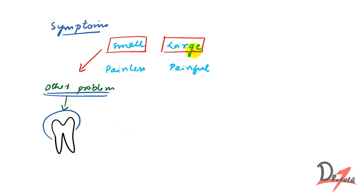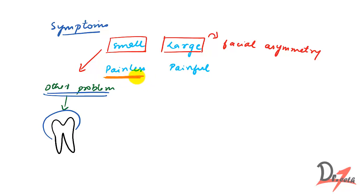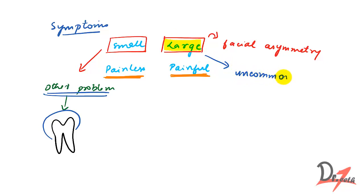If the dentigerous cyst is large, it will expand the bone causing facial asymmetry, but it will still be painless. Painless is the normal characteristic of the dentigerous cyst — it gets painful only when infected. Whether small or large, it will be painless, but if painful that means it is infected. Large dentigerous cysts are uncommon.